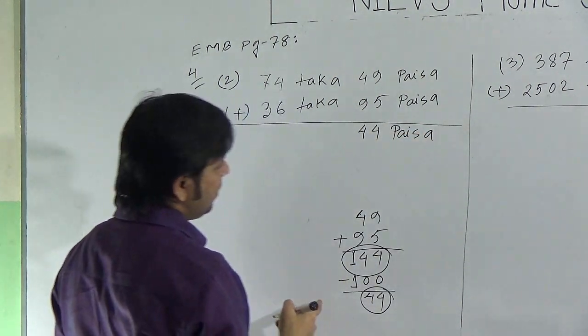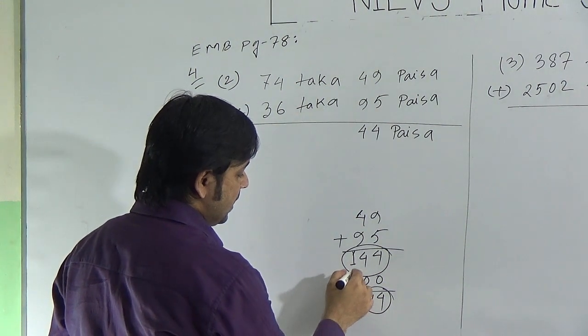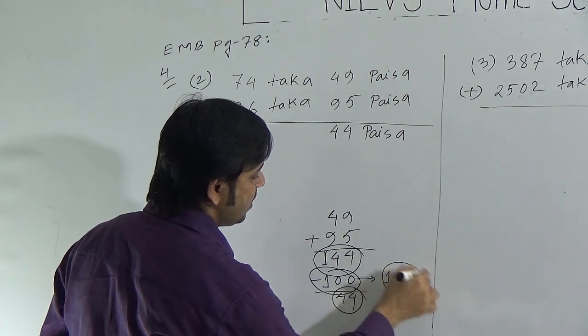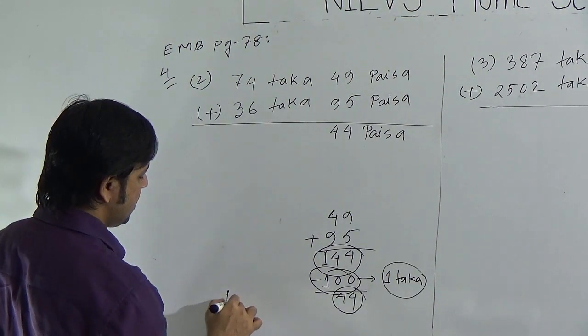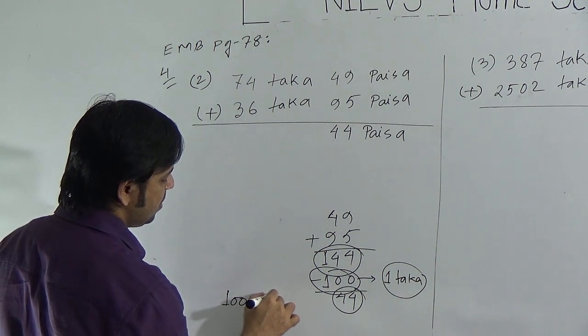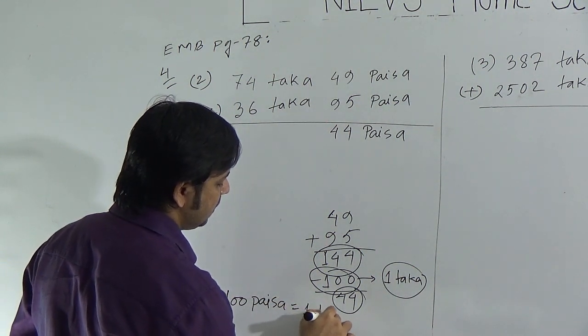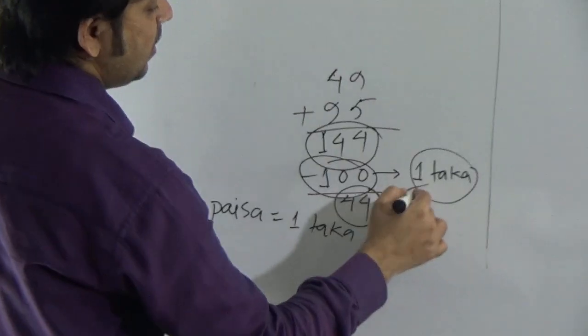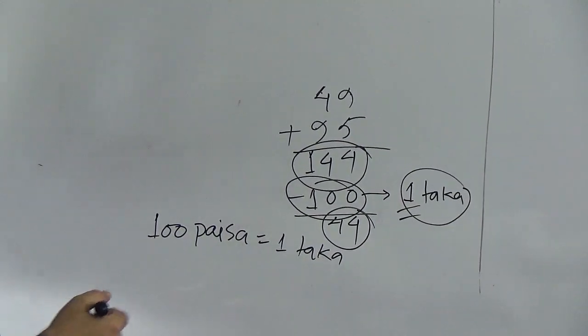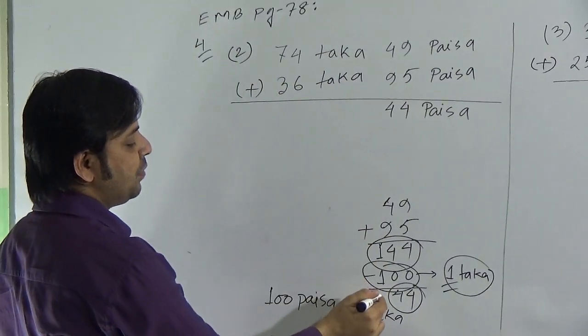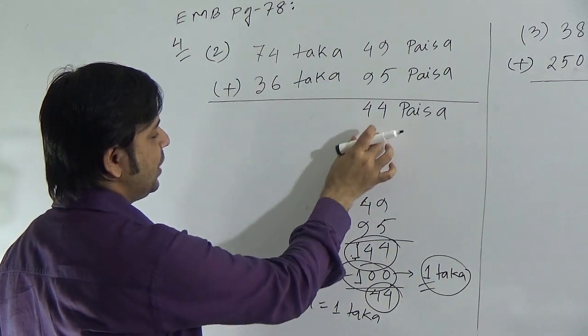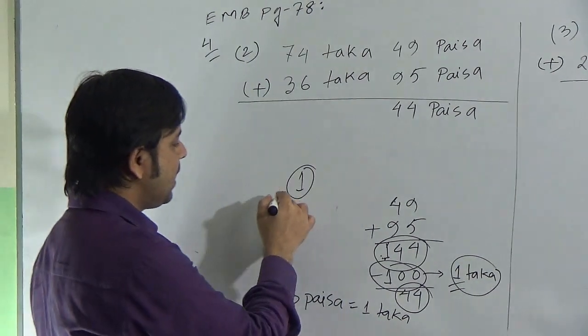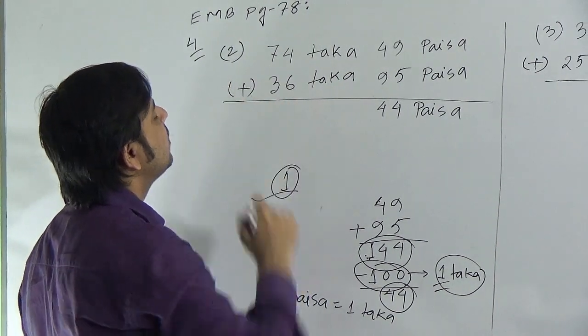Dear students, observe that for this 100 paisa, we will get 1 taka. As 100 paisa is equal to 1 taka, we can write 1 taka remaining. If we add these two paisa, we will get 144 paisa. And if we write 44 paisa, then remaining is 1 taka. This one taka, we have to add with this taka.